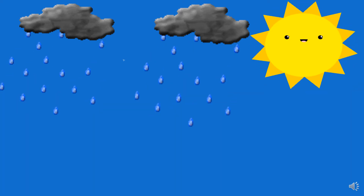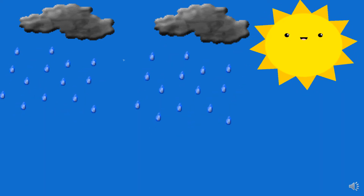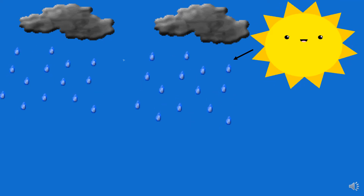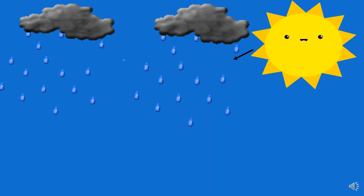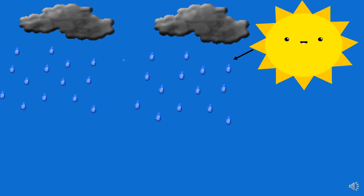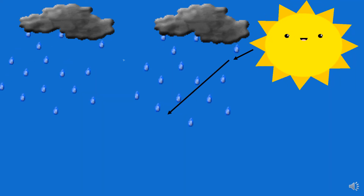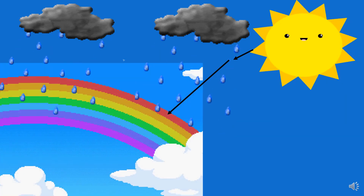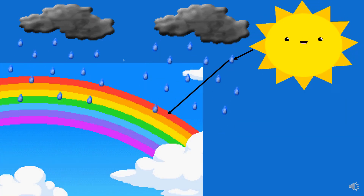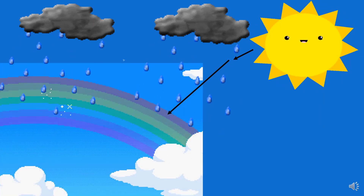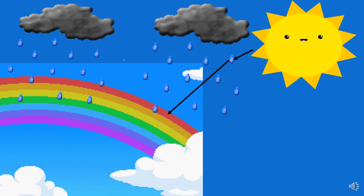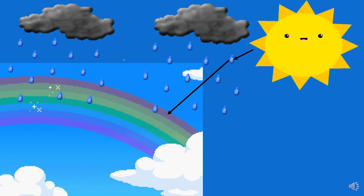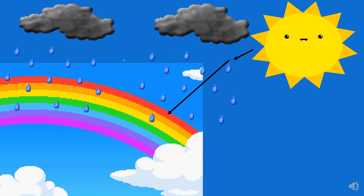As light enters a raindrop, it bends slightly at separate angles, forming different light rays. These bent light rays pass by our eyes. That is how we can see a rainbow.